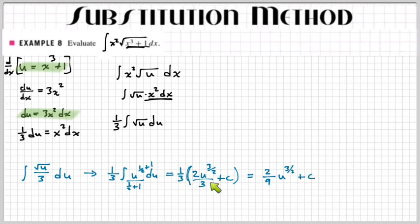So I go one third times this that changes the two and the nine. And so you have two ninths. And then the C just stays constant. It's just another constant. So that's your answer. That's how you use u substitution.